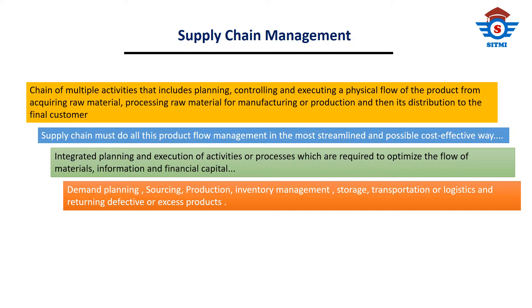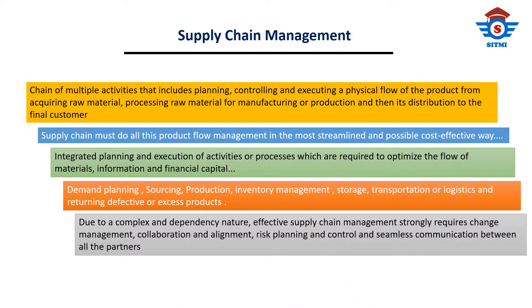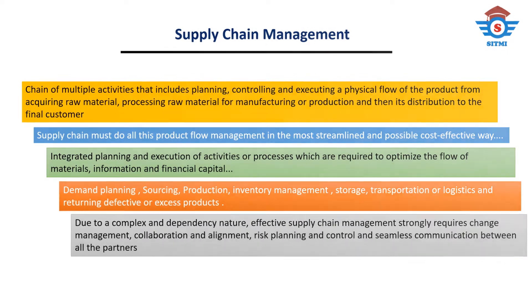Supply chain management is a complex process and network that relies on each partner in the chain — from suppliers to manufacturers and other partners — to run it smoothly. Due to its complex and dependency nature, effective supply chain management strongly requires change management, collaboration and alignment, risk planning and control, and seamless communication between all the partners.